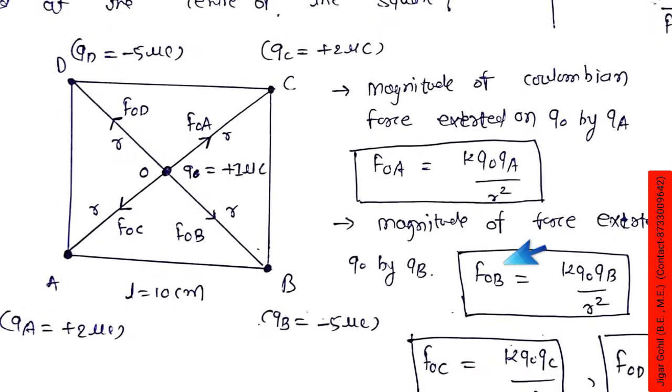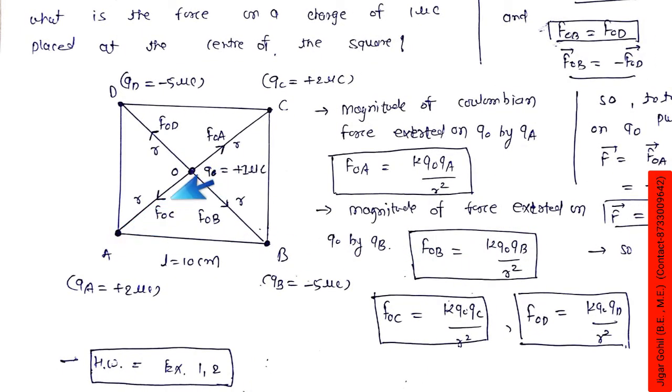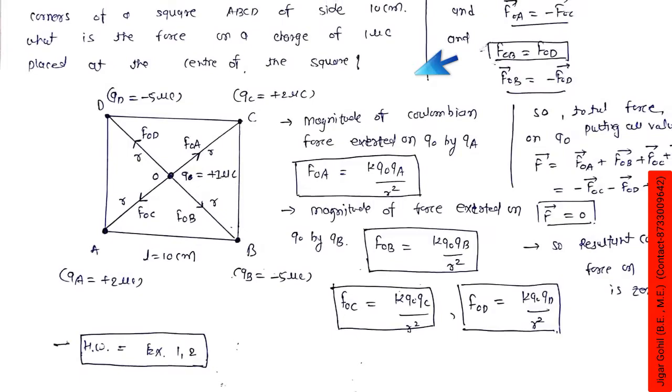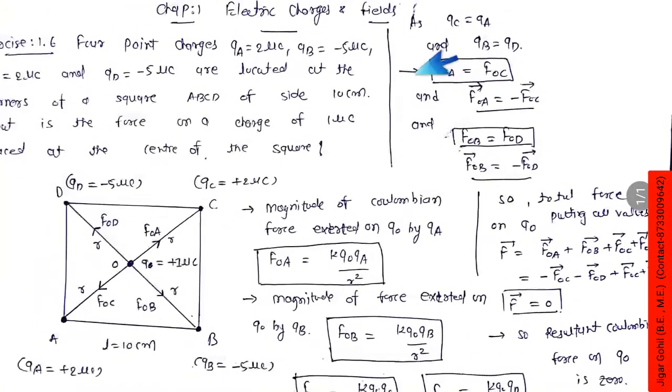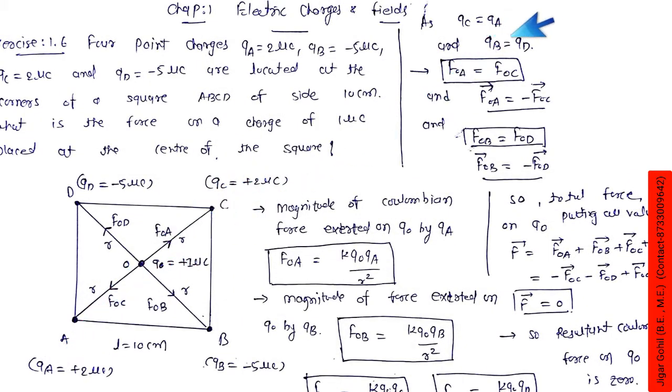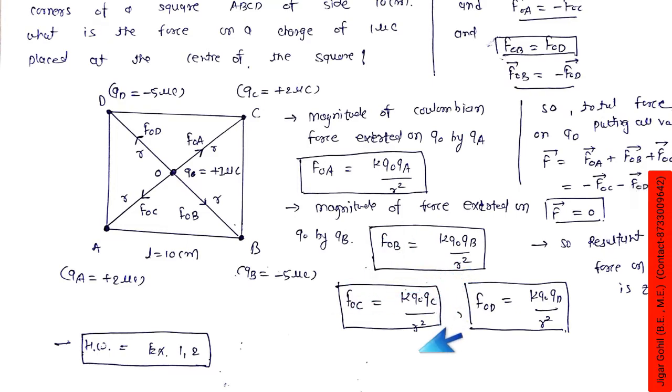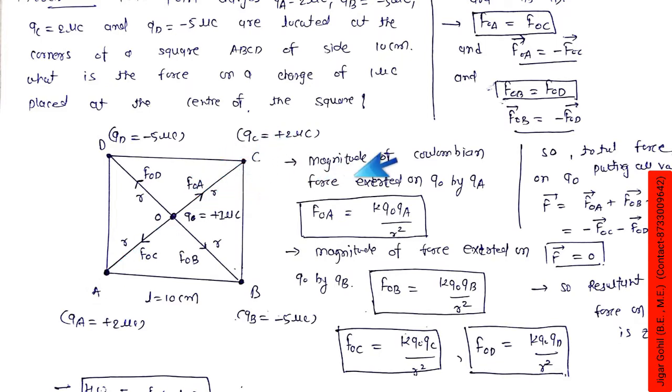Here the force FOB will be in this direction, and due to C at origin, FOC. Here also there is 2 microcoulomb and here also 2 microcoulomb. So the magnitude of FOA and FOC will be the same, but their directions will be opposite. As the value of qc equals qa, we can say that FOA equals FOC in magnitude, or FOC = k·q0·qc / r².